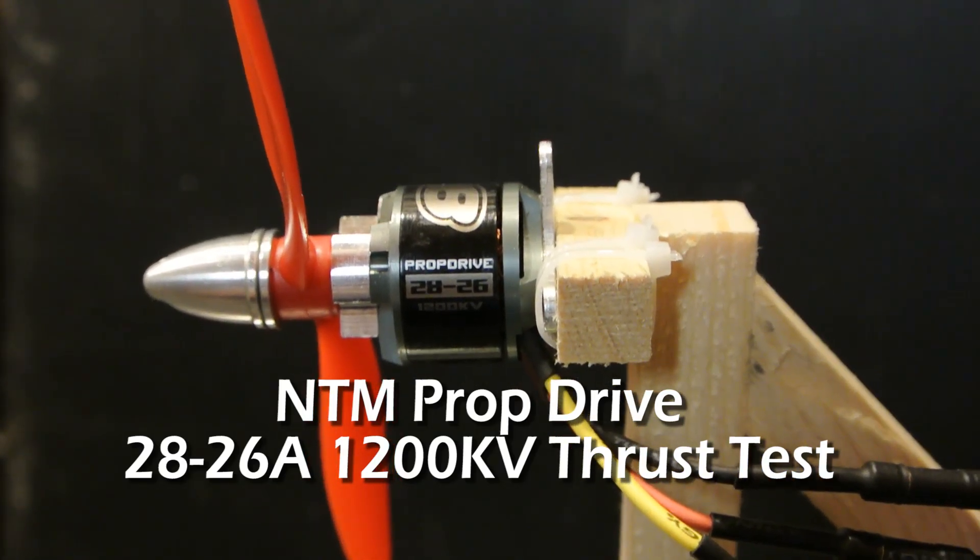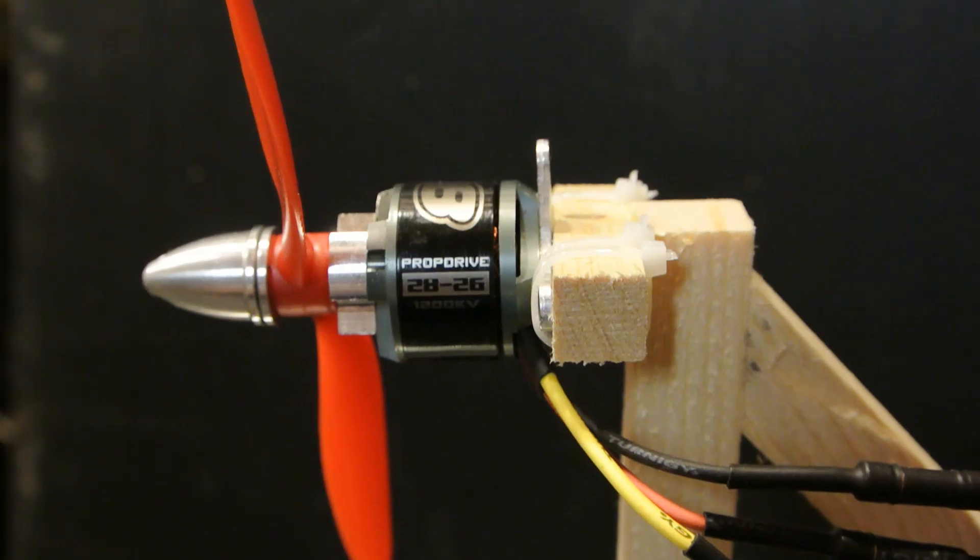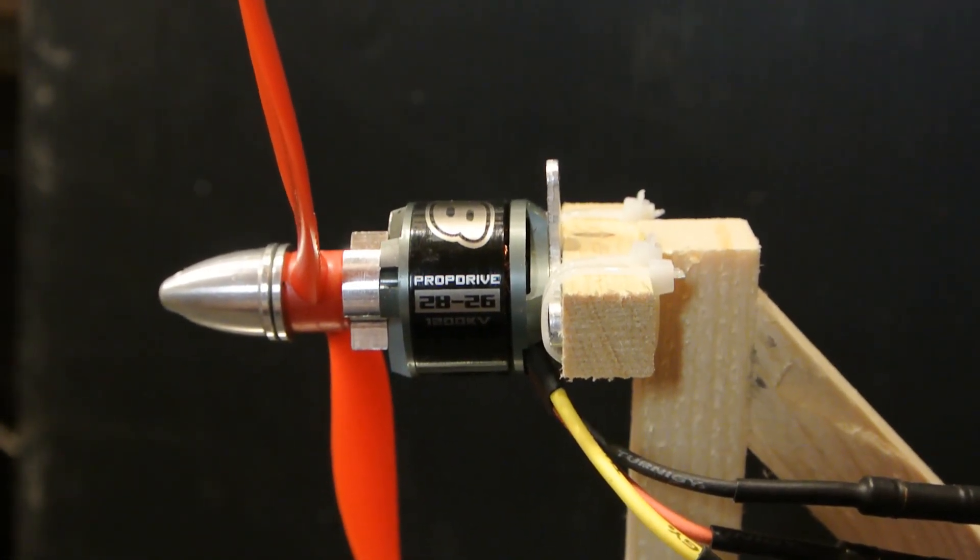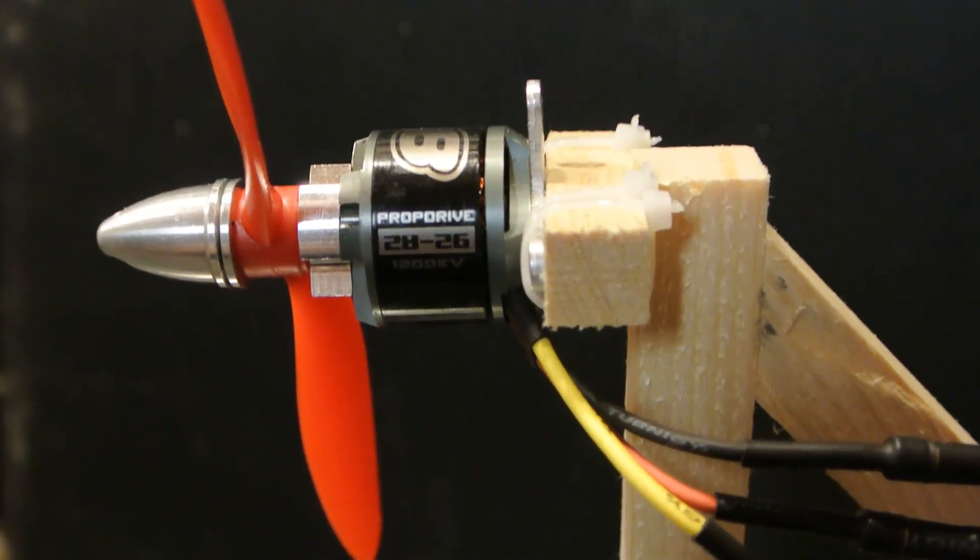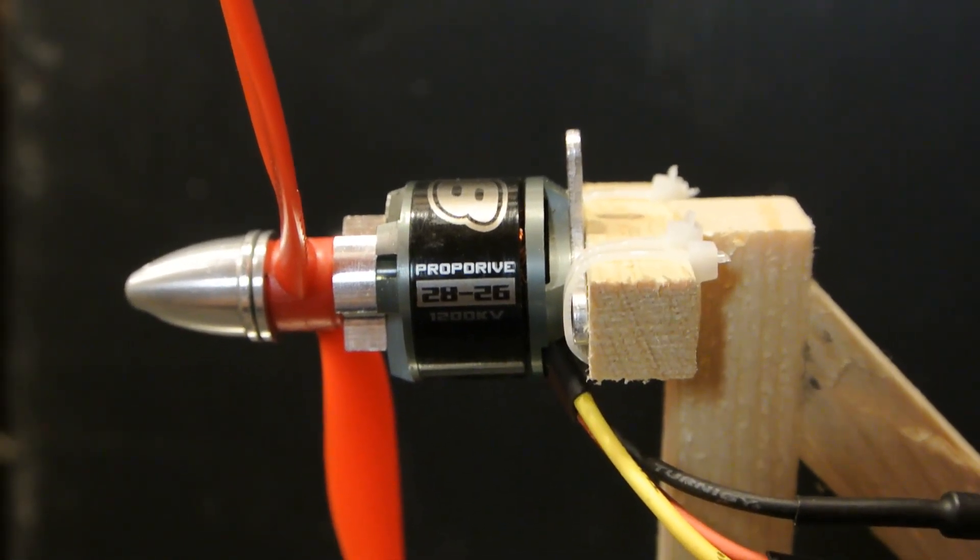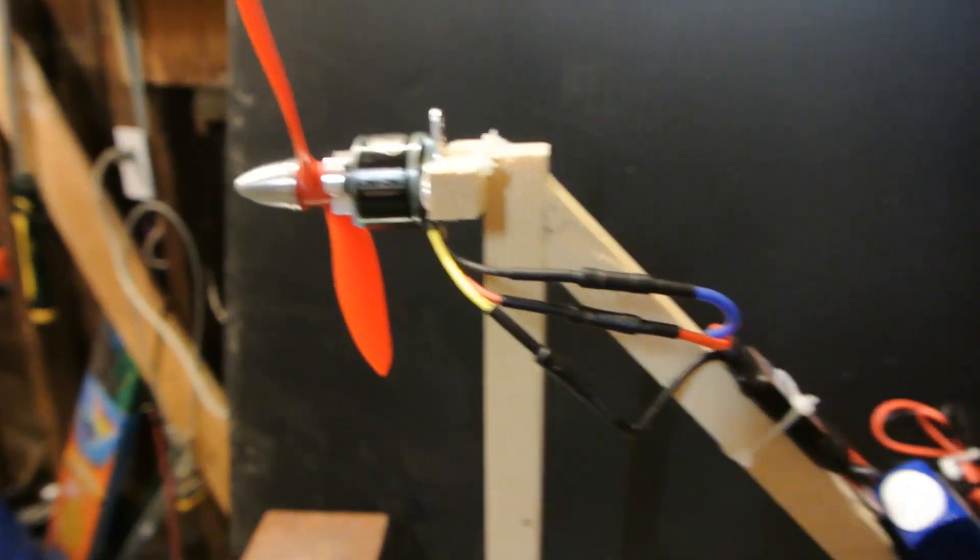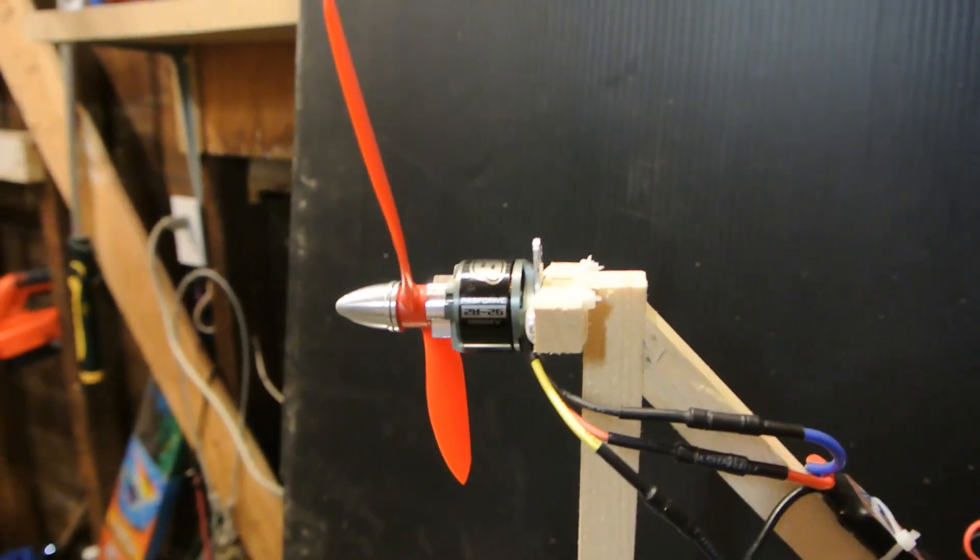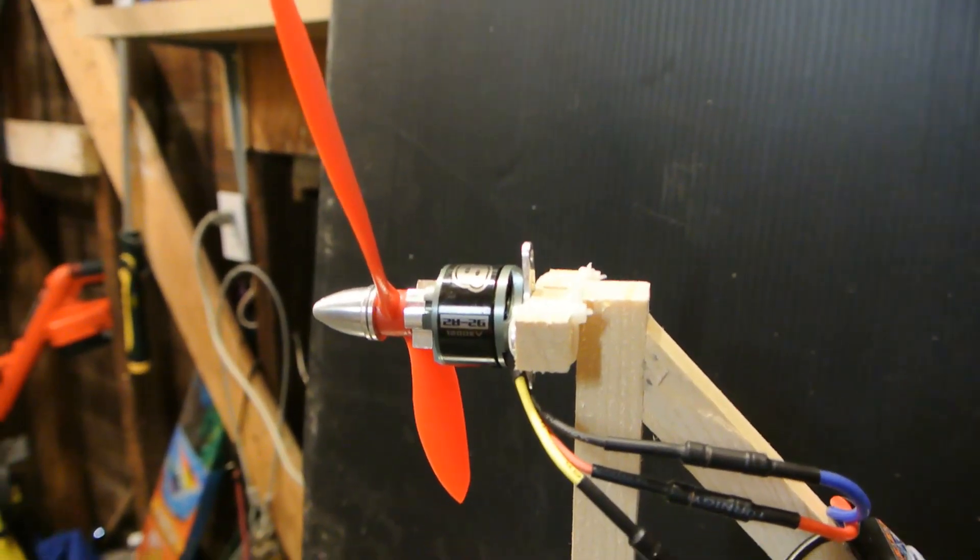Alright, in this video I'm going to do a review and thrust test of the NTM Prop Drive 28-26 1200 kV motor from Hobby King brushless outrunner. I'll do a test with an 8 by 4.5 inch prop.